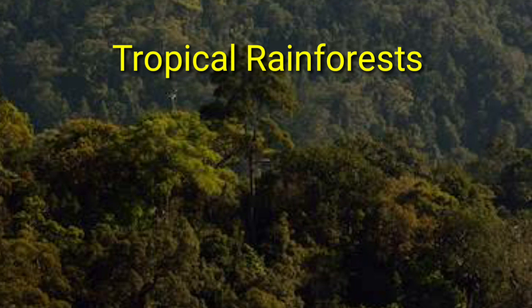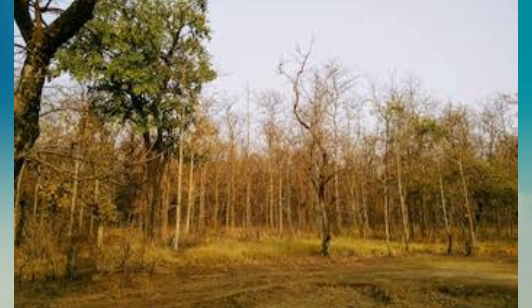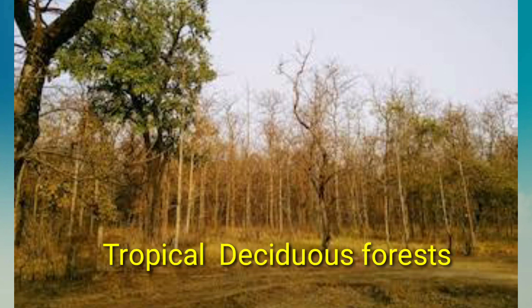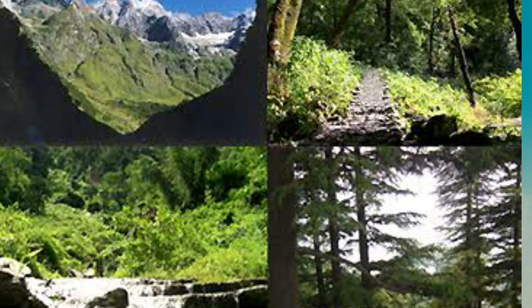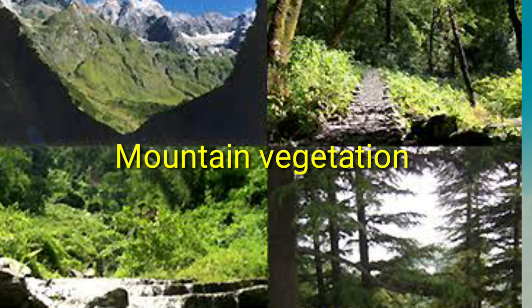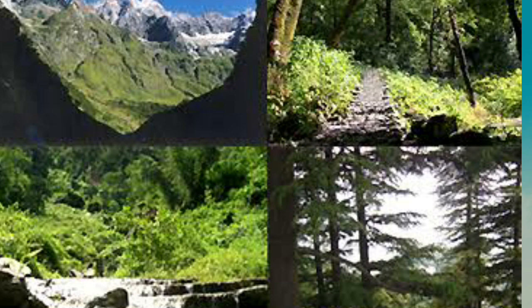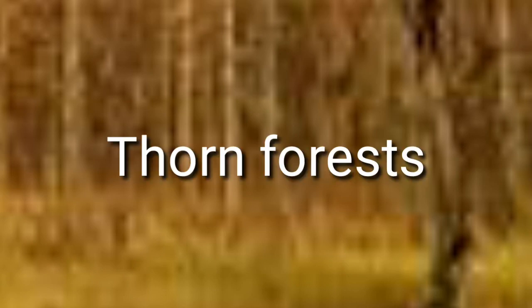Tropical deciduous forests, also known as monsoon forests, are found in areas receiving 100 to 200 centimeters of rainfall. Moist deciduous forests cover northeastern states, foothills of the Himalayas, Jharkhand, Odisha, Chhattisgarh and eastern slopes of the Western Ghats; teak is the most important tree here. Dry deciduous forests, found where rainfall is between 70 to 100 centimeters, are in the plains of Bihar and Uttar Pradesh, with teak, sal, peepal and neem as flora. Mountain forests occur in high-altitude areas with decreasing temperature, including wet temperate forests, temperate grasslands and alpine vegetation. Thorn forests and scrubs are found in northwestern regions of Gujarat, Rajasthan, Madhya Pradesh, Chhattisgarh, Uttar Pradesh and Haryana, where rainfall is less than 70 centimeters; flora includes babul, euphorbia and cactus.